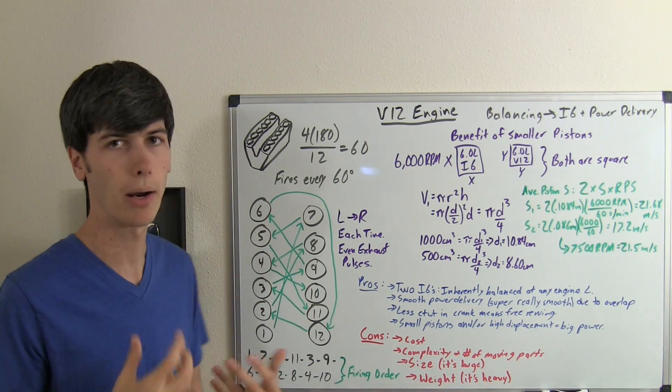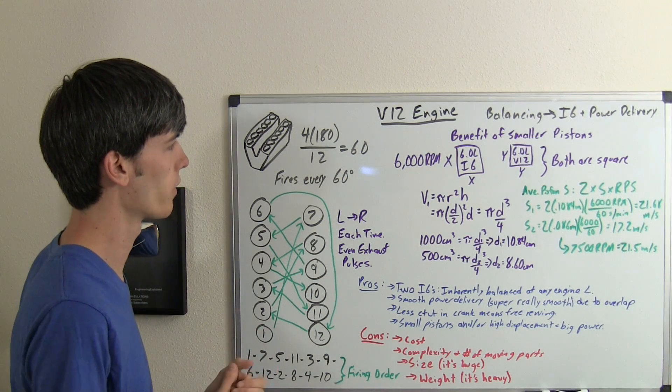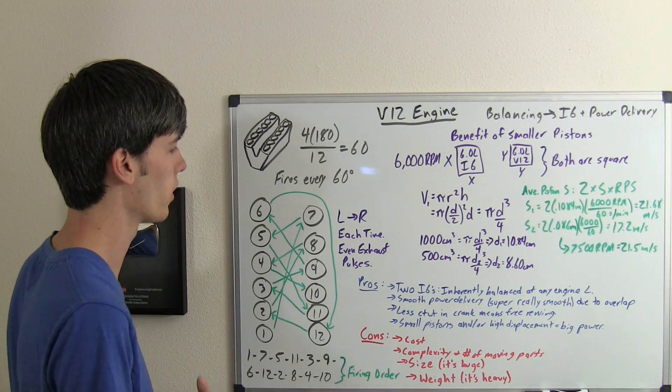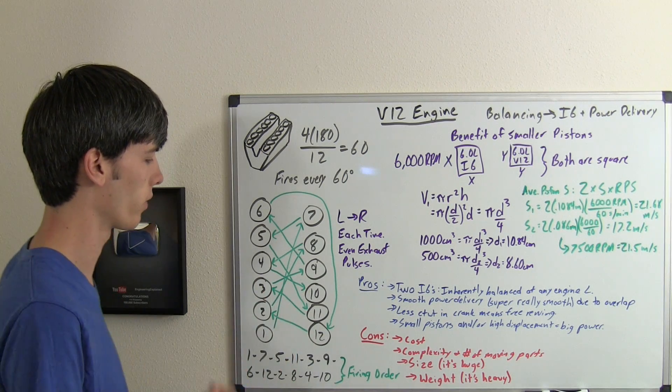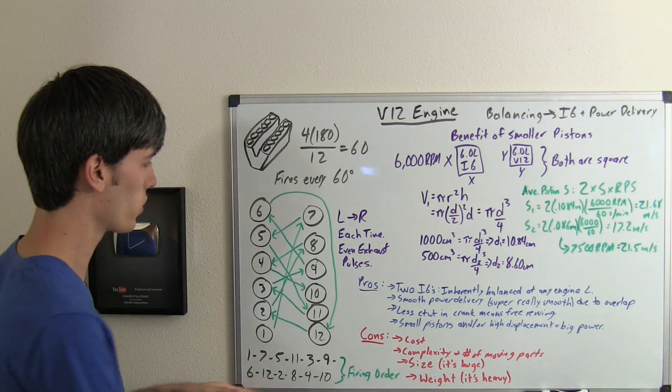You're going to have two times as many power strokes per revolution of the crankshaft as an inline 6-cylinder. So two times the overlap, and that's just going to give you a very smooth power delivery. So let's look at a V12 engine layout.